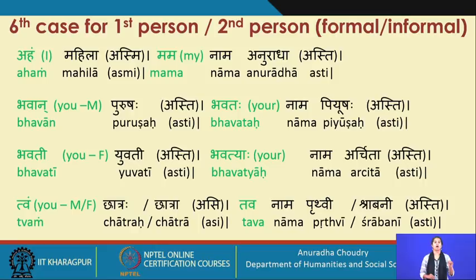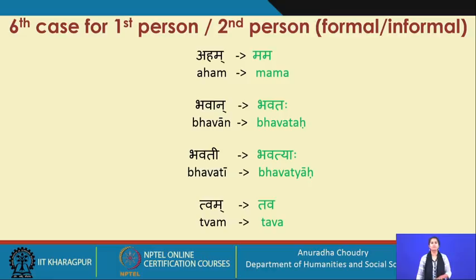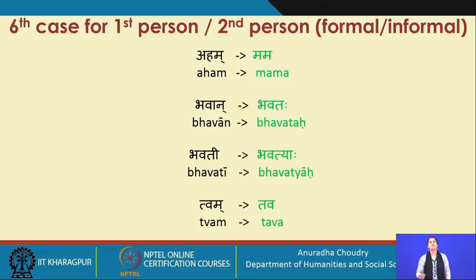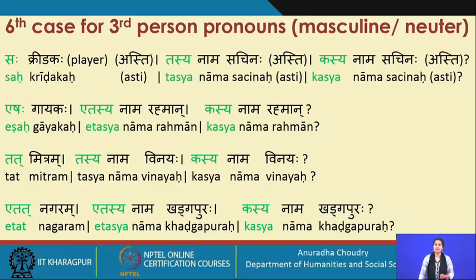Let's look at the genitive forms alongside their nominative forms: aham becomes mama; bhavan becomes bhavataha; bhavati becomes bhavatiyah; tvam becomes tava. Moving on, we look at the third person cases for the masculine and the neuter.